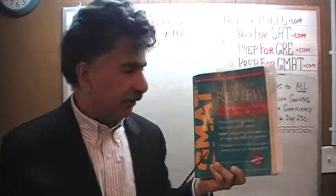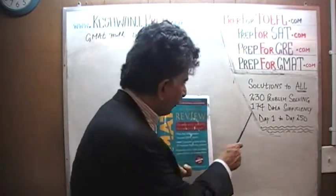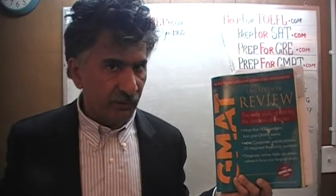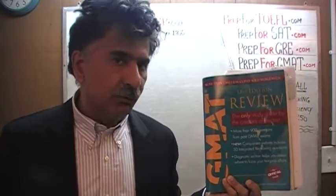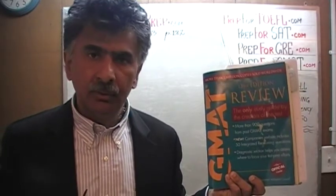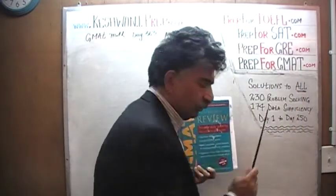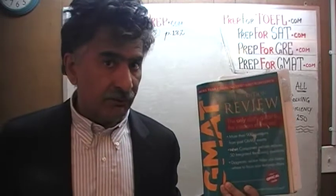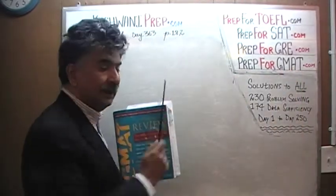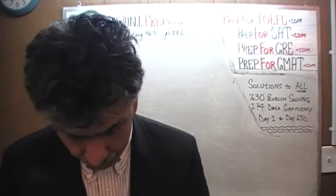The book contains 230 problem solving questions. It has 174 data sufficiency questions. We have already solved every single math problem from this book. If you are interested in watching any of the original solutions to the problems, you will find the original solutions from day number 1 through to 50. Right now, we are in the process of redoing the problems and we are on page number 182. Please turn to it.